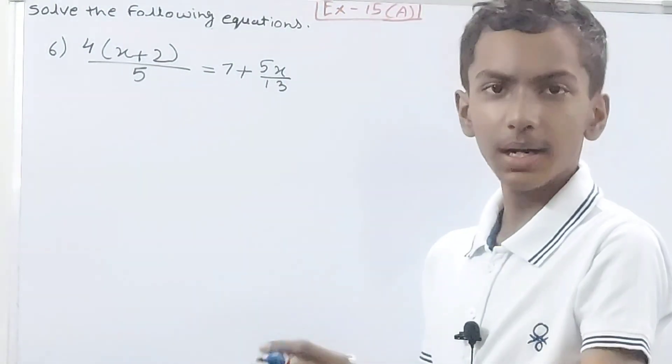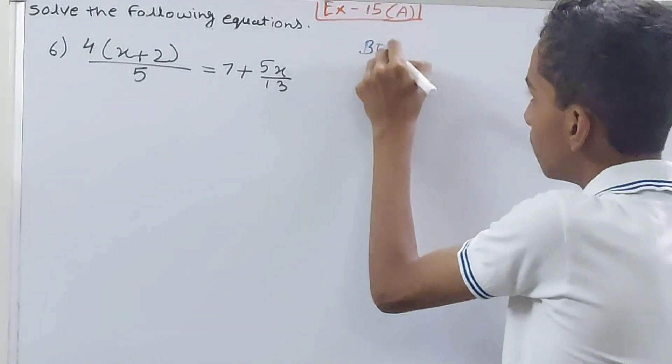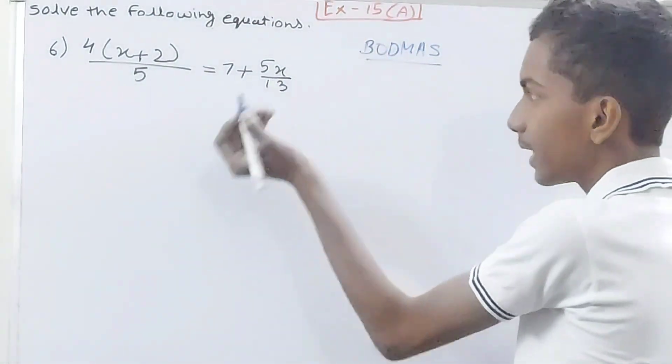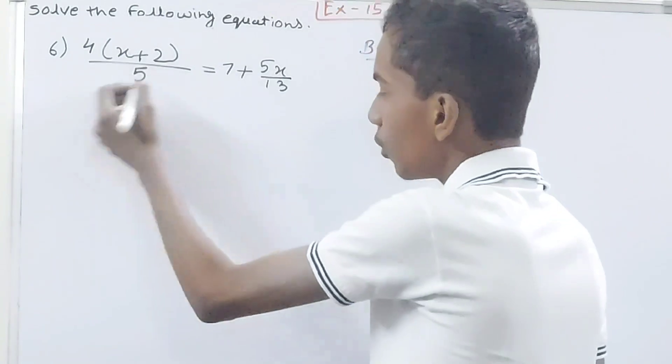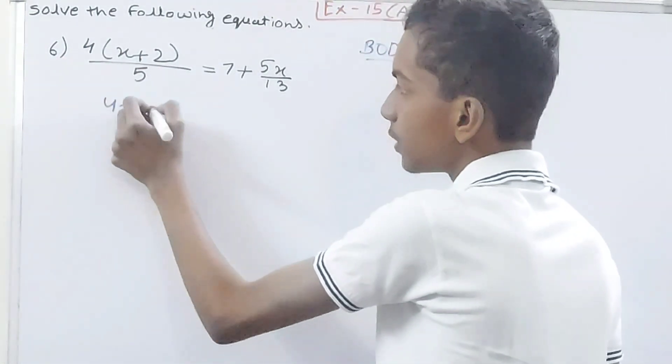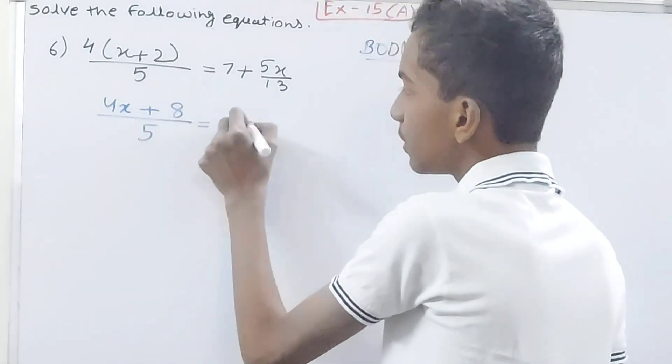Wherever you see the bracket, just open it. Why? Because you will use the BODMAS rule. What does this rule say? First, brackets off, right? Open. So we are going to open these brackets and see what you get: 4 into x is 4x, plus 4 into 2 is 8, upon 5, and rest of the equation becomes as it is.